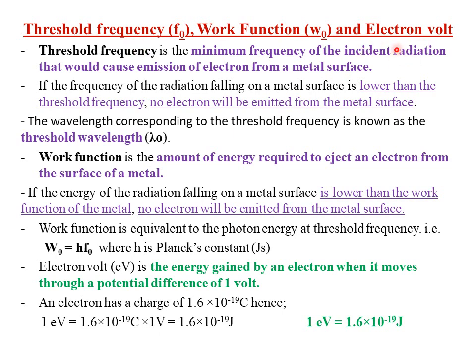If the incident radiation, for example ultraviolet radiation, does not have a certain minimum requirement of frequency, then such radiation will not cause emission of electrons. In order for electrons to be emitted, there must be a certain threshold or minimum frequency that the incident radiation must possess. If the frequency of the incident radiation is lower than the threshold frequency, then no electrons will be emitted — no photoelectric emission will take place.